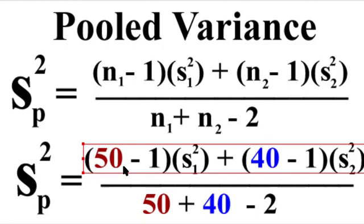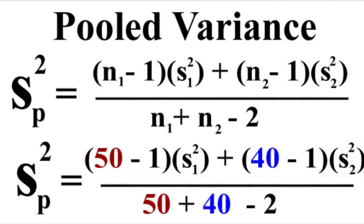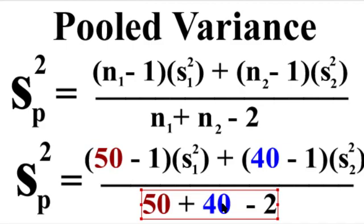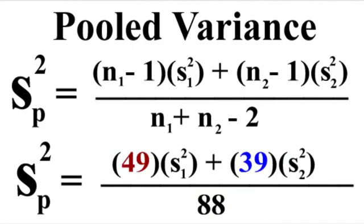So 50 minus 1, I think I can do that one in my head. And 40 minus 1 turns into 49 and 39. And on the bottom, 50 plus 40 is 90 minus 2 is 88. Okay, that was easy.